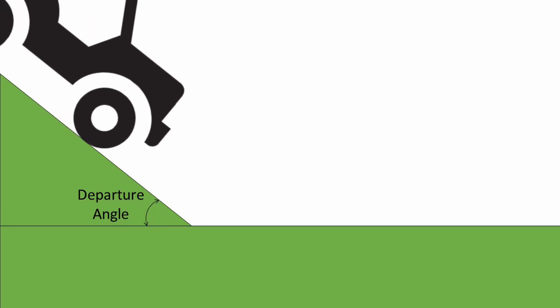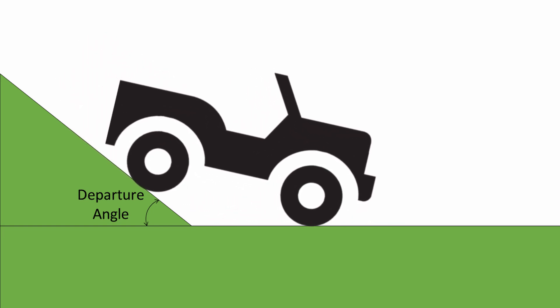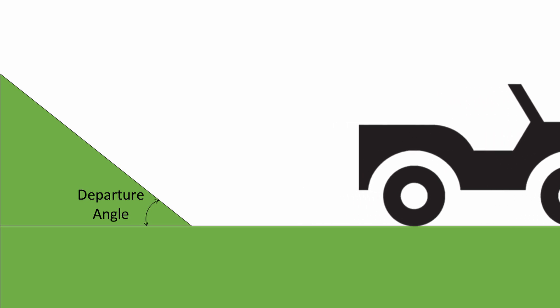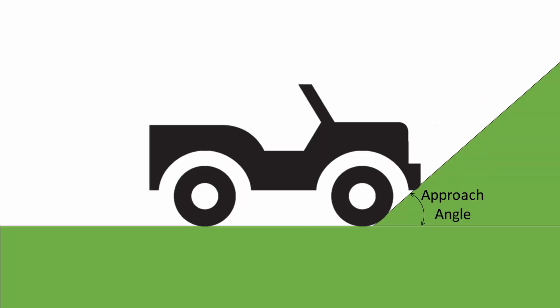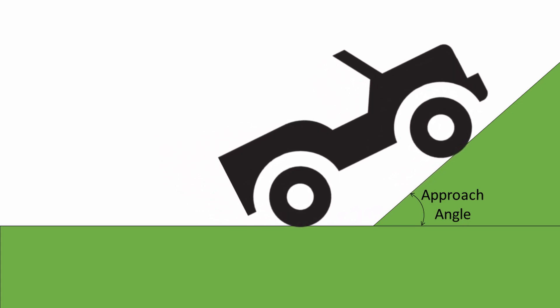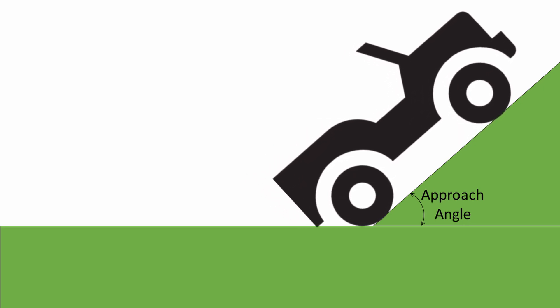The departure angle tells us how steep a slope the vehicle could leave, and how steep a slope it could transition from driving down to being on the flat. It also has an effect on how steep a slope the vehicle is able to climb, because as the front of the vehicle goes up, the back goes down. It might be possible to get the front wheels onto the slope, but the back of the vehicle could drag on the ground and stop the vehicle from proceeding.